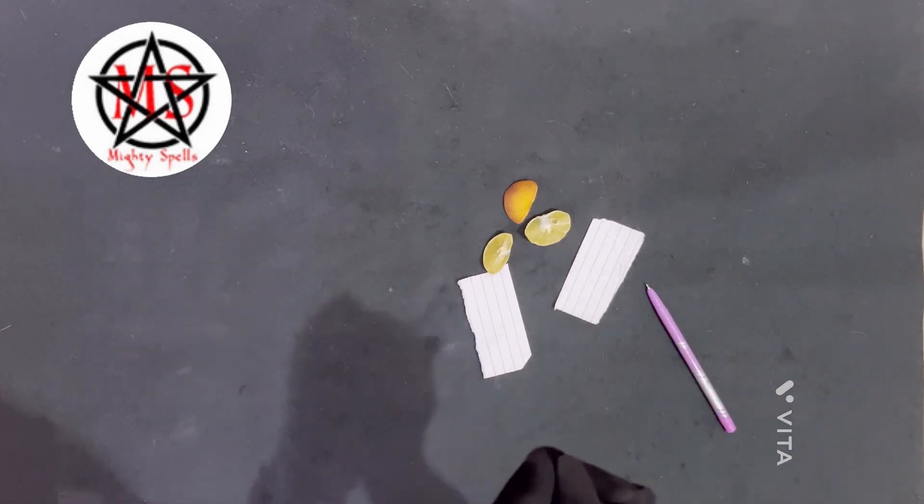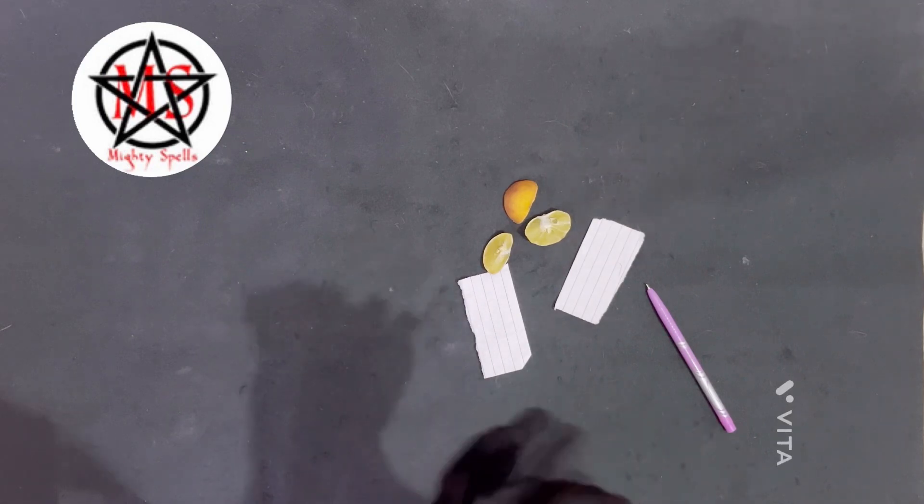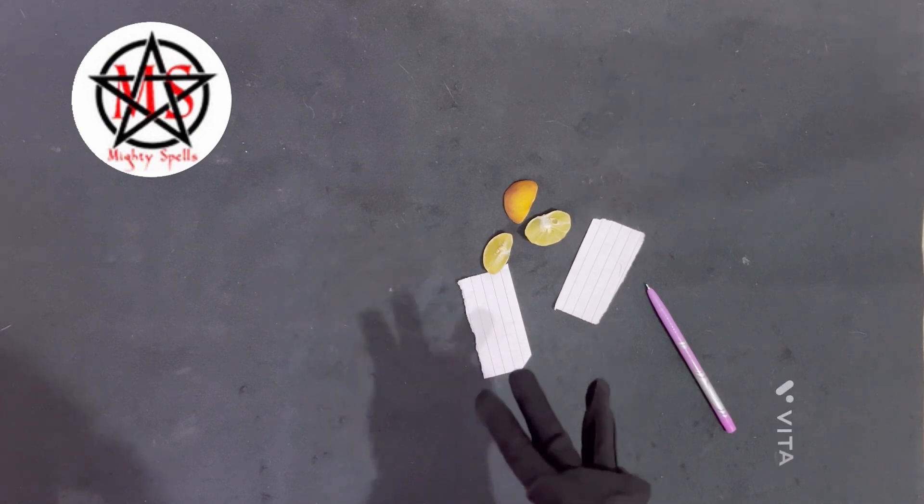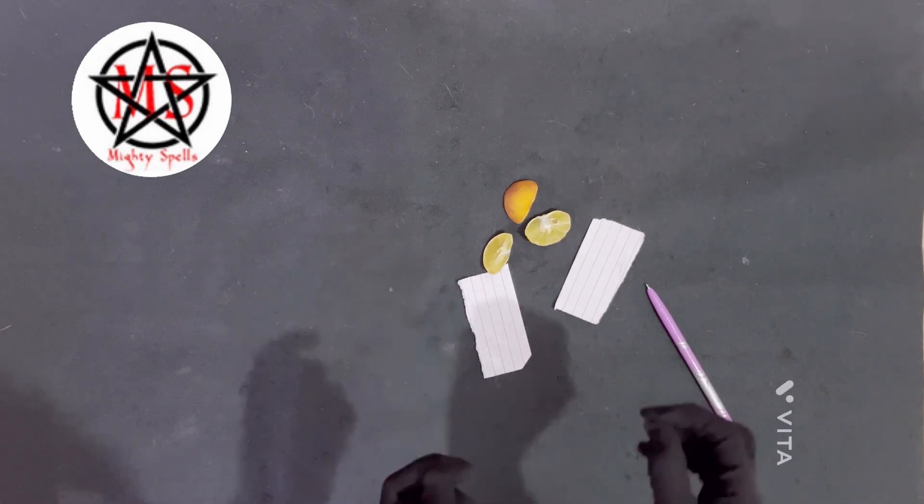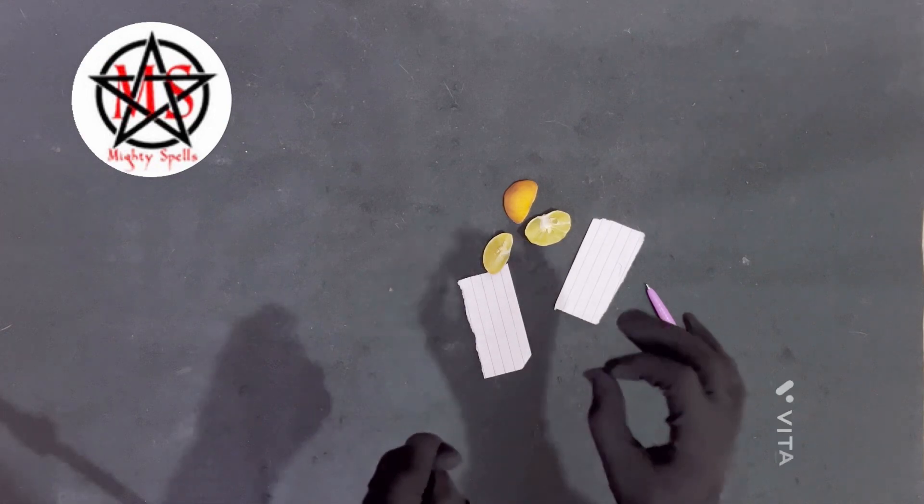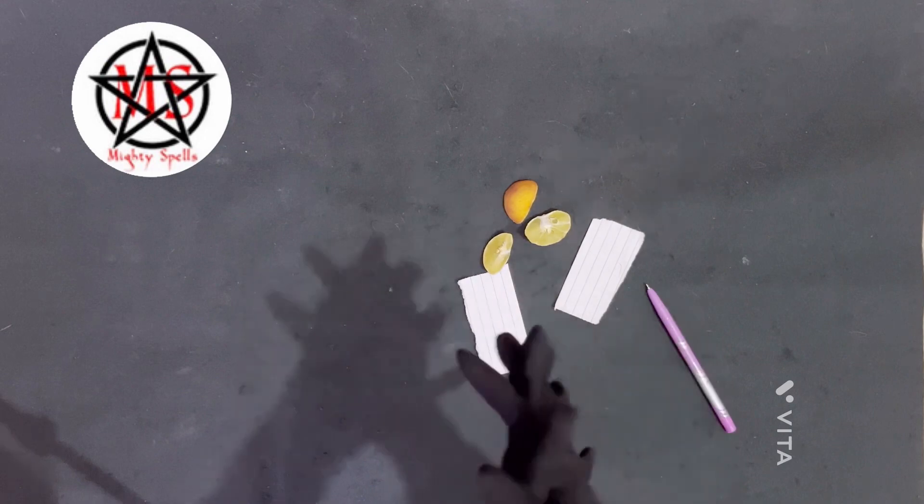This is the simple and perfect spell that you can do. It is a very easy spell and you can do it in just five minutes. If you have three lemons, two papers, a pen, and some five minute time, then you can do this spell. So let's get started without wasting any more time.